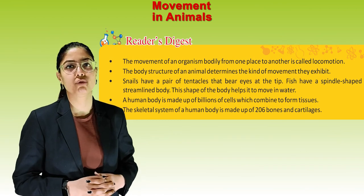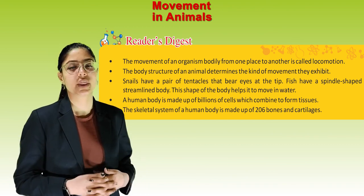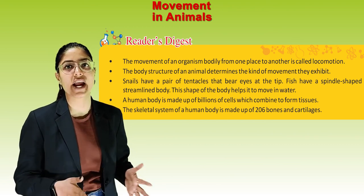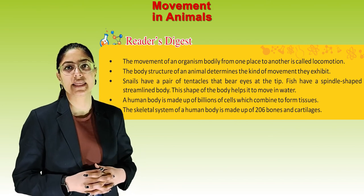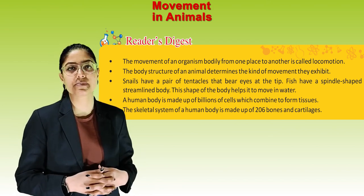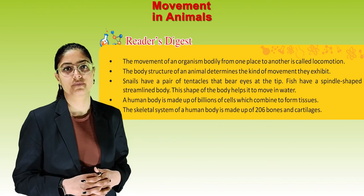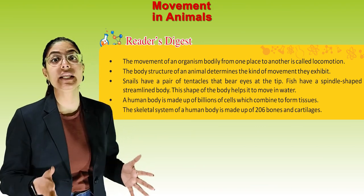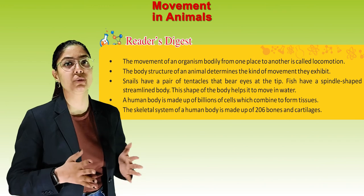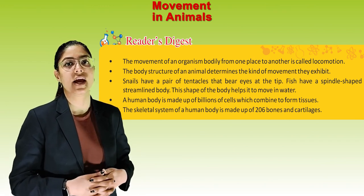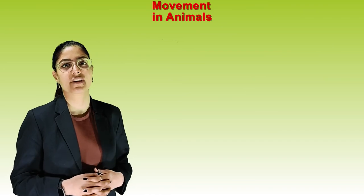Reader's Digest summary: The movement of an organism bodily from one place to another is called locomotion. The body structure of an animal determines the kind of movement it exhibits. Snails have a pair of tentacles that bear eyes at the tip. Fish have a spindle-shaped streamlined body that helps them move in water. A human body is made up of billions of cells which combine to form tissues. The skeleton system of the human body is made up of 206 bones and cartilages. That's all for today's chapter — bye-bye!